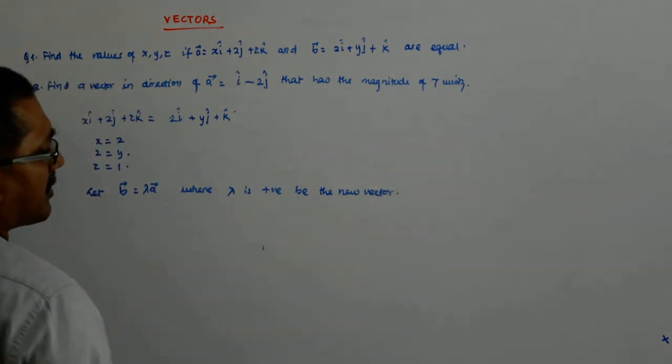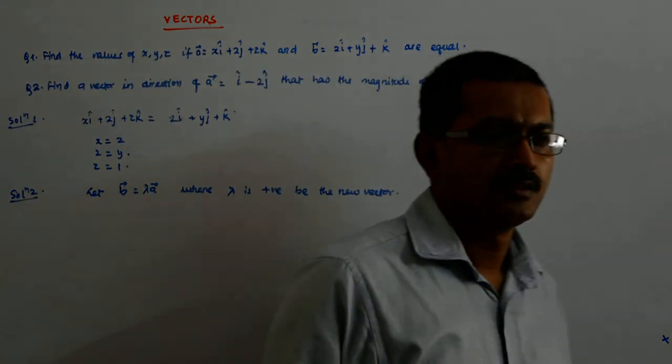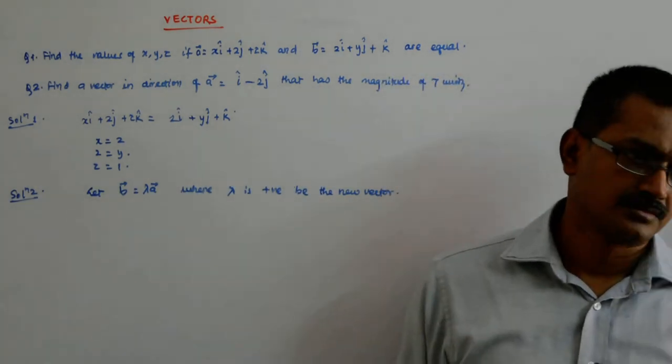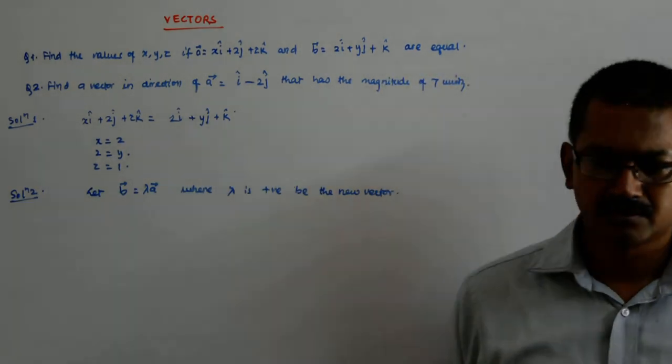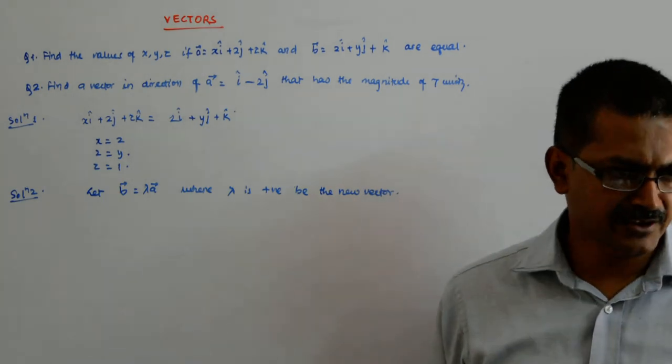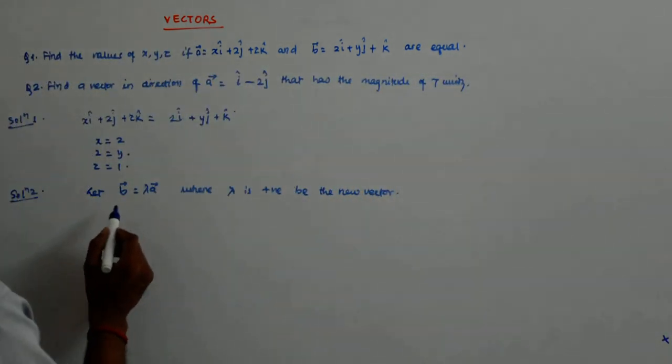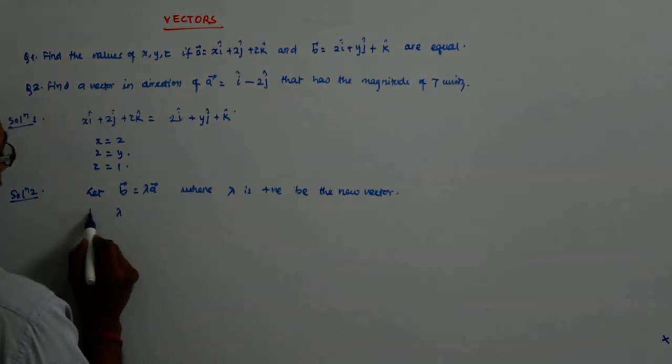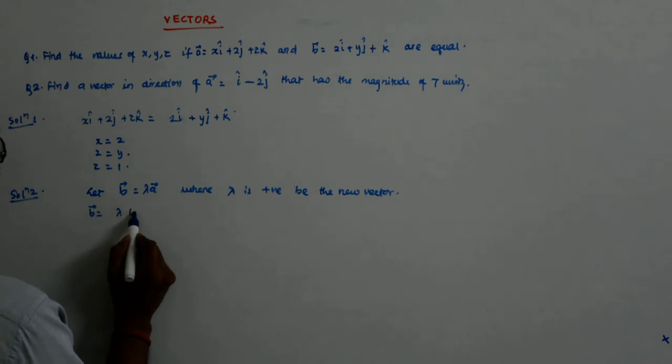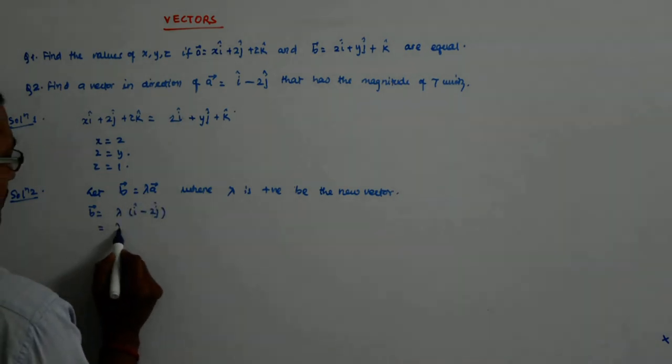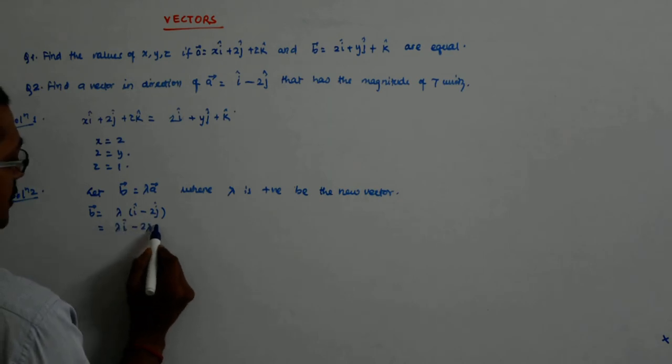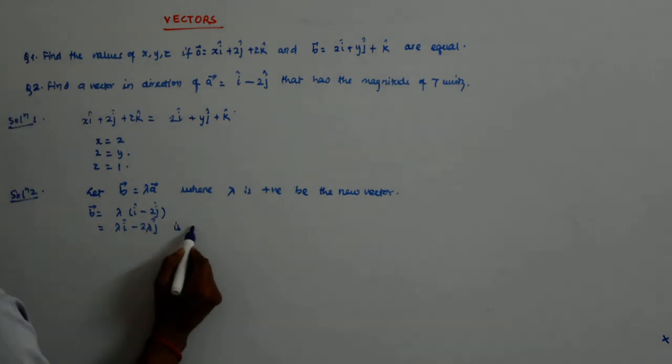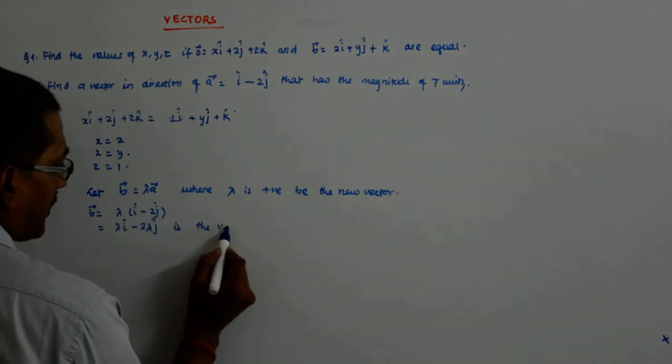Now, just recall your scalar multiplication fundamental. It says if you multiply a vector by a positive number, it gives you a vector in the same direction. So lambda B is equal to lambda I minus 2J which is lambda I cap minus 2 lambda J cap is the vector.